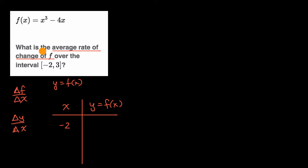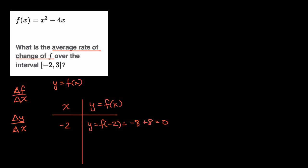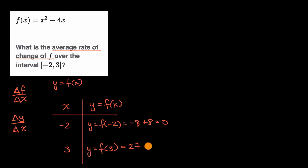What is f of negative two? Well, y equals f of negative two, which is negative two to the third power, which is negative eight, minus four times negative two — that's minus negative eight, so that's plus eight — which equals zero. And then when x is equal to three, the right end of that interval, y equals f of three, which is 27 — three to the third power — minus four times three, which is minus 12, so that equals 15.